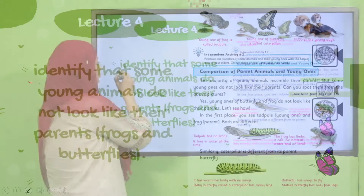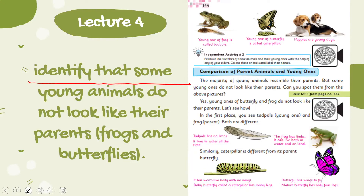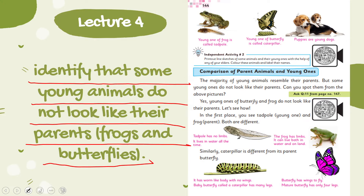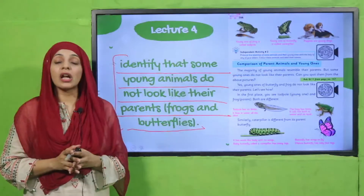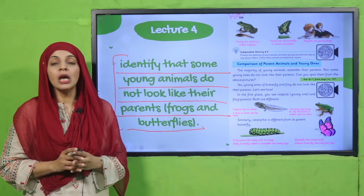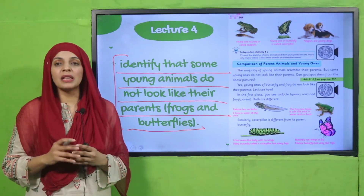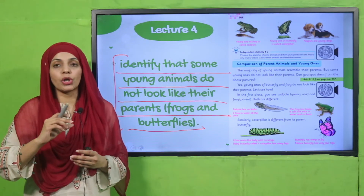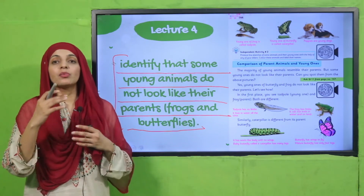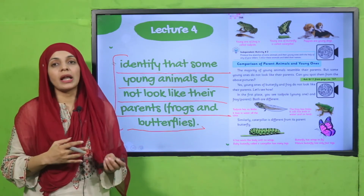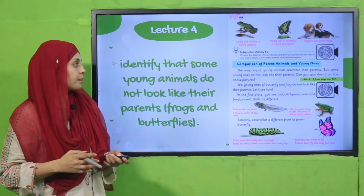In lecture number three and four, the students will be able to identify that some young animals do not look like their parents, like frogs and butterflies. They don't resemble their parents at birth, but slowly, as they grow up, they start looking like their parents.